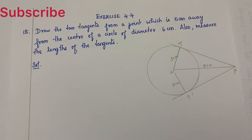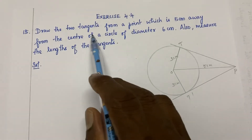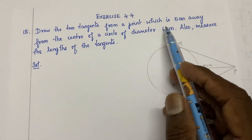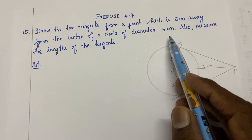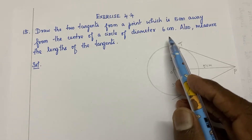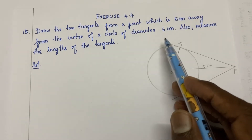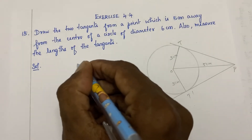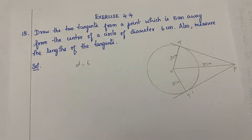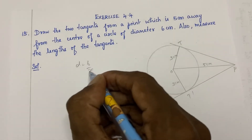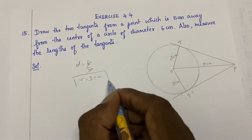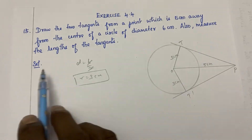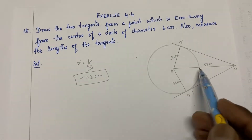Question number 15: Draw two tangents from a point which is 5 centimeters away from the center of a circle of diameter 6 centimeters. Also measure the length of the tangent. The diameter is 6 cm, so the radius is equal to 3 centimeters.